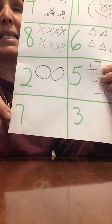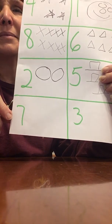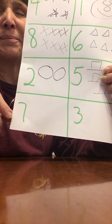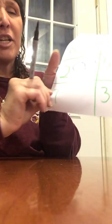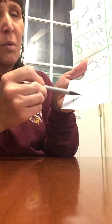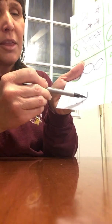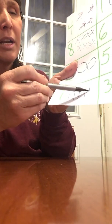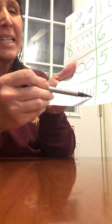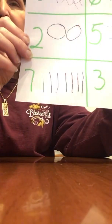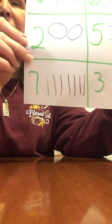What number is this? It is number seven. Seven. We're going to draw seven lines. One, two, three, four, five, six, seven. There are seven lines.